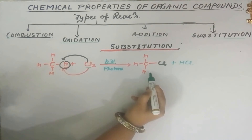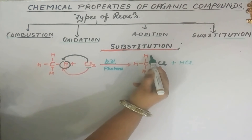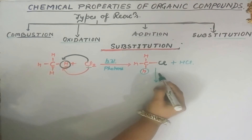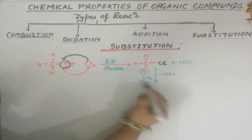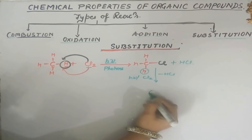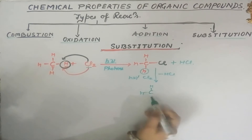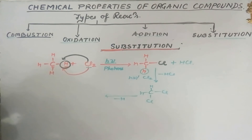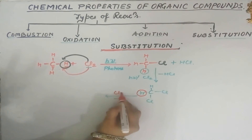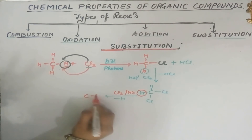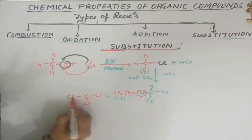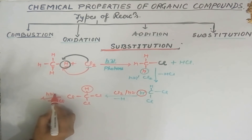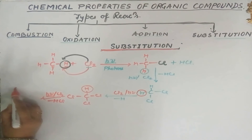The reaction continues until all hydrogens are replaced by chlorine atoms one by one. In each step, one HCl is removed and Cl2 is added in the presence of hν. Step by step: methane (CH4) → chloromethane (CH3Cl) → dichloromethane (CH2Cl2) → trichloromethane (CHCl3) → tetrachloromethane (CCl4). Each successive step replaces one more hydrogen with chlorine.